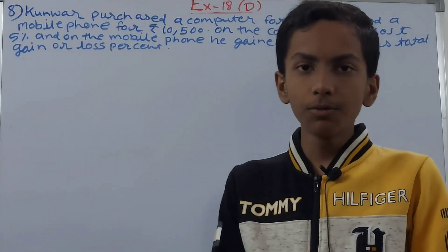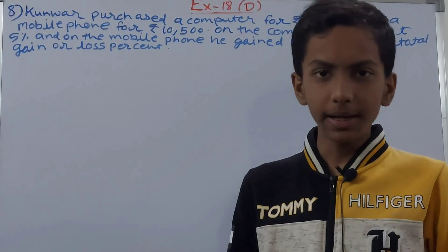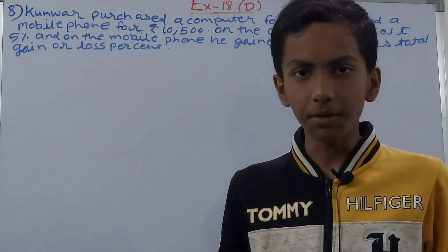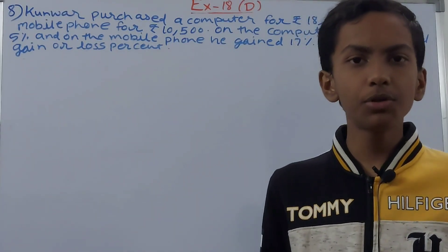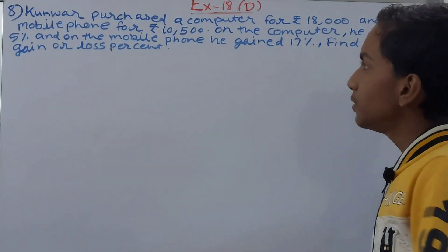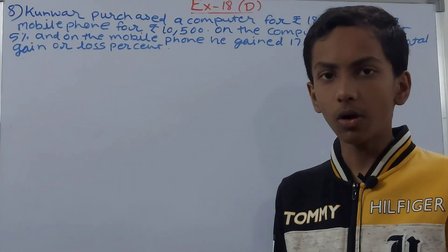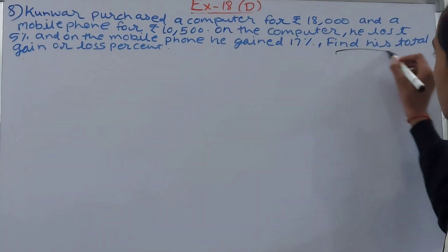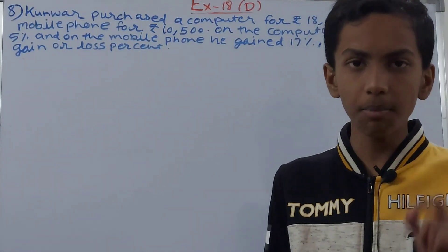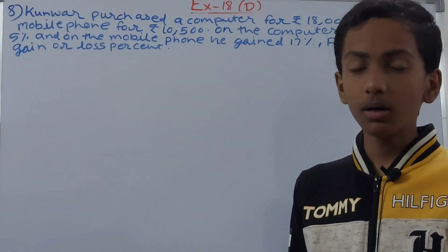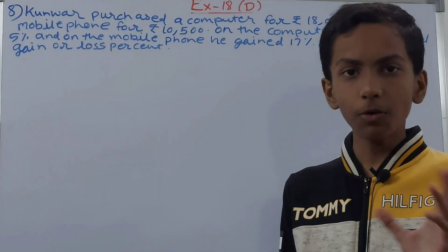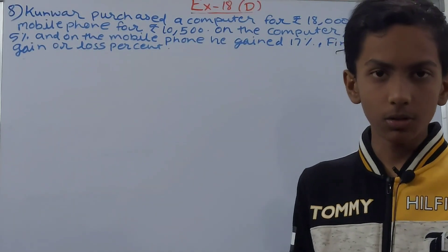So you see here, Kunwar has purchased two different articles — a computer and a mobile phone. He purchased the computer for ₹18,000 and the mobile phone for ₹10,500. When he sold the computer he lost 5% on it, and when he sold the mobile phone he gained 17% on it. We need to find the total gain or loss percent on both articles combined. Whenever you have multiple articles, we add the selling prices and cost prices of all of them together separately, then compare to find the gain or loss.